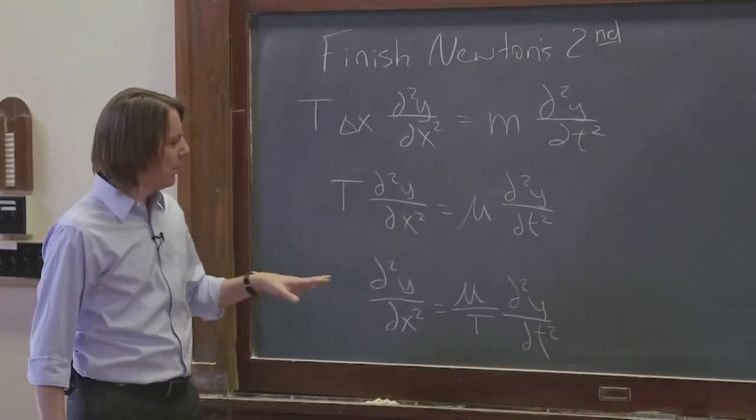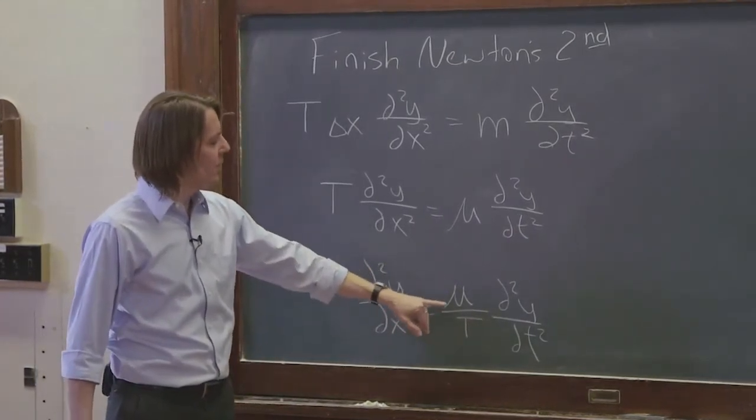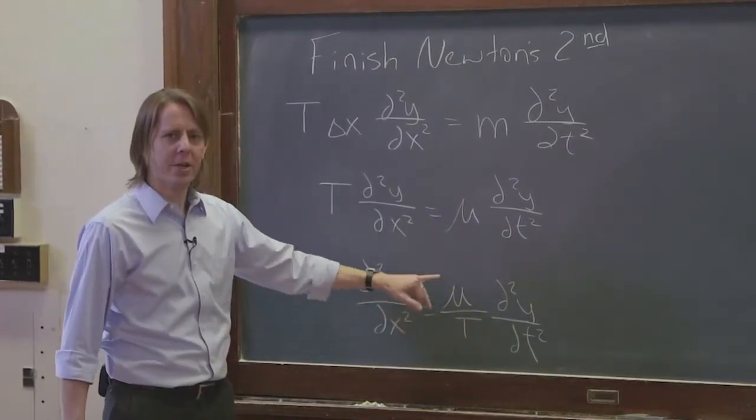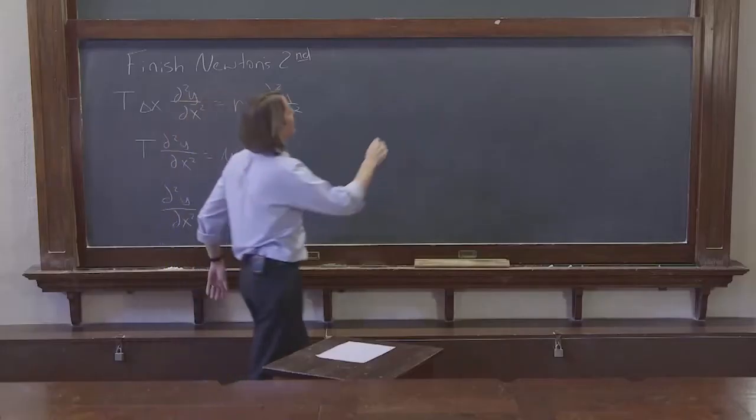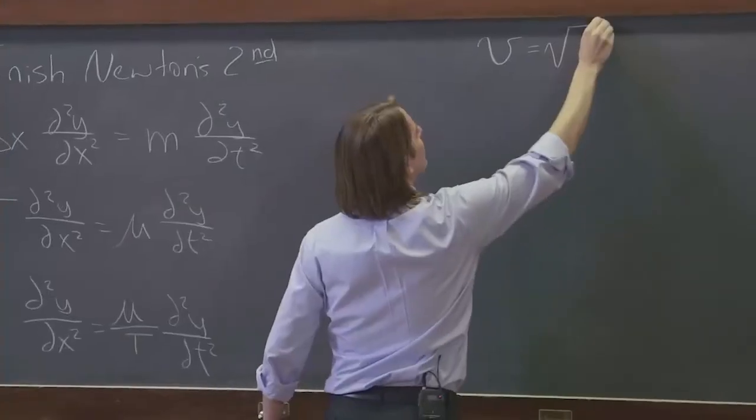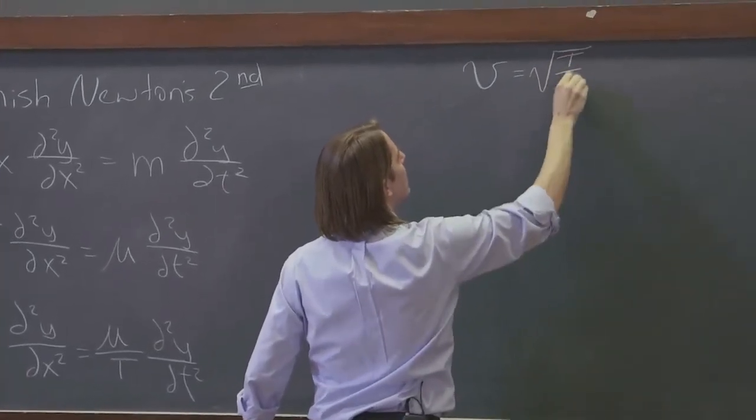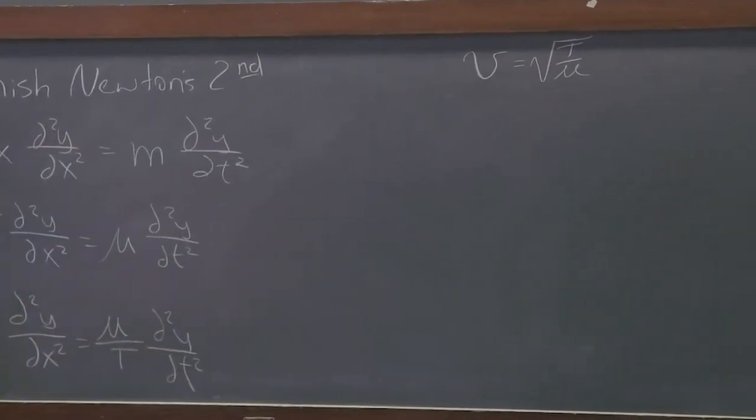Do you hear that? So we have mu over T. And this is interesting, this is in seconds squared per meter squared. So it kind of looks like a velocity. So we could actually, if we wanted to, we could say let's define a velocity and rewrite that as a velocity as a square root of T, the tension over the mass density.